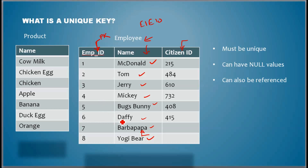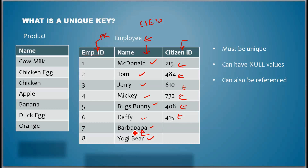You cannot have an employee who doesn't have an employee ID — that's the business rule. But then there are some columns where values need to be unique, but null values are allowed. For example, McDonald has a citizen number, Tom has a citizen number, Bugs Bunny and Daffy all have citizen numbers.